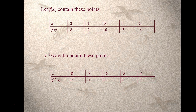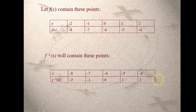Take a look at this example. If f of x has a table of values where your x values are in the first row and your y values are in the second row, then points on the inverse have the domain and range swapped. Hopefully you see that the x and y values are all reversed or swapped, and that's an important characteristic of inverse functions.